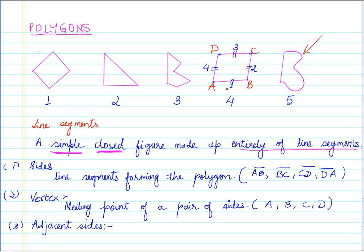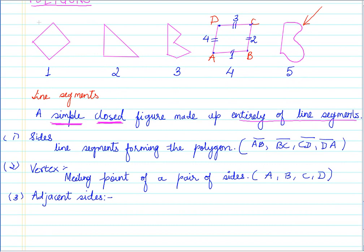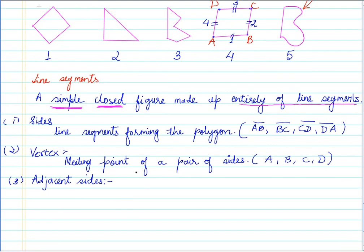One and three is not adjacent sides. Similarly, two and four are not adjacent to each other. Why? Because they do not have a common endpoint. So that is the definition of the adjacent sides. Okay.